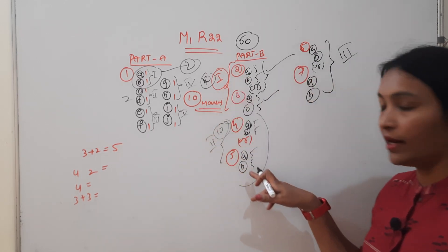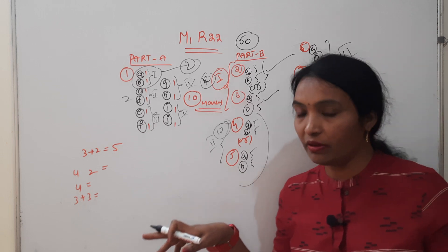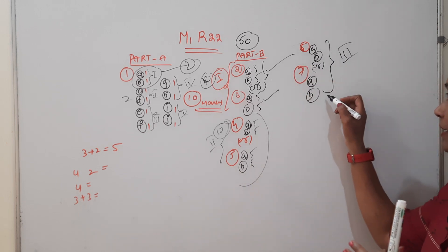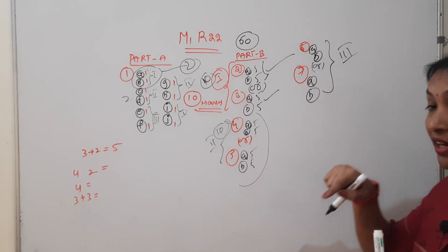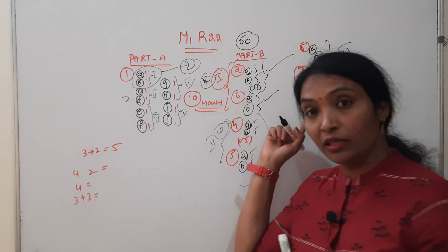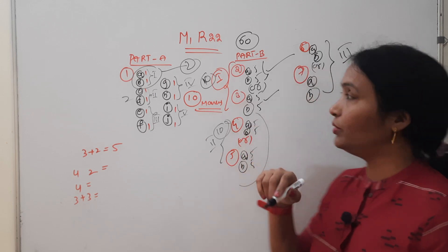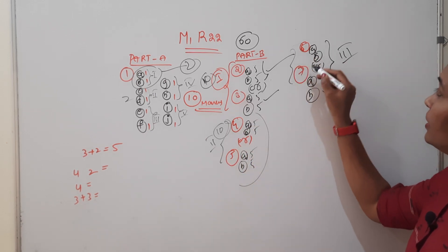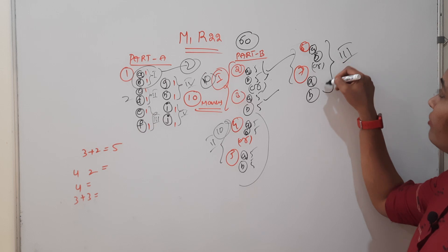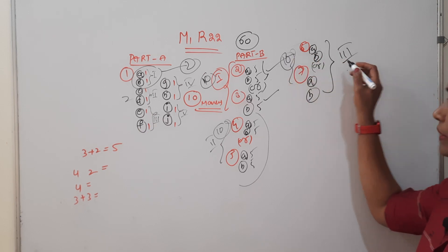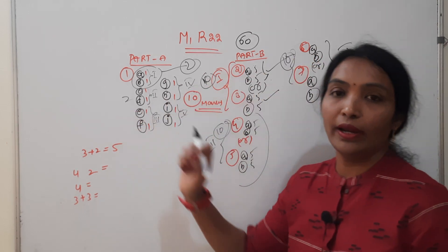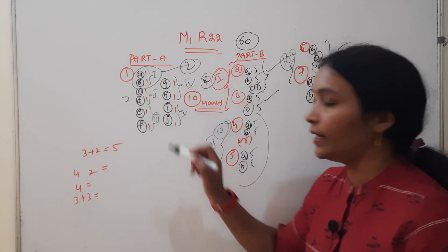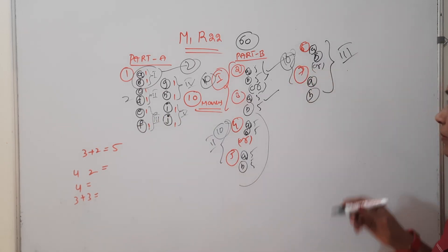Here we have 1-2 units. R18 also is 1-2. R22 is the 3rd unit. But in R18 paper, this is the 4th unit. Here we have 5-5-5 and 10. And in the 3rd unit, 10 and 2 marks. Here is the 3rd unit — 10 and 2 — and there are 12 marks.